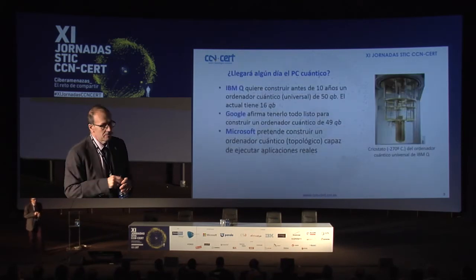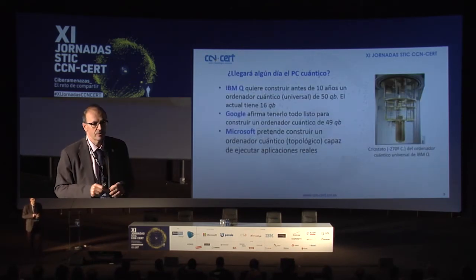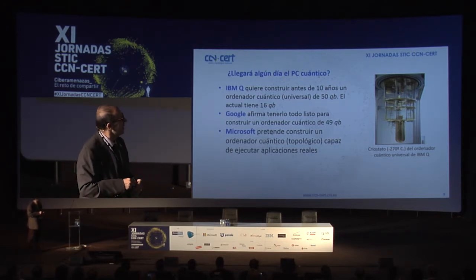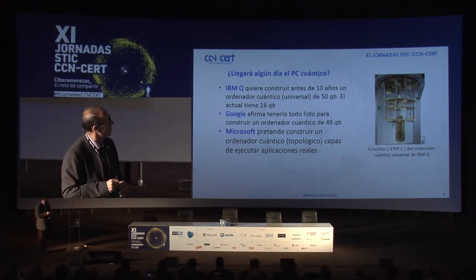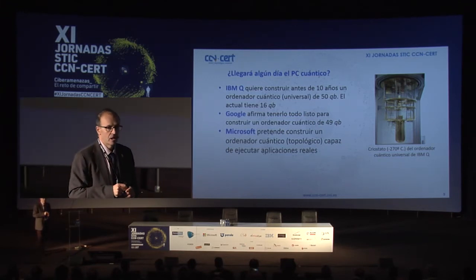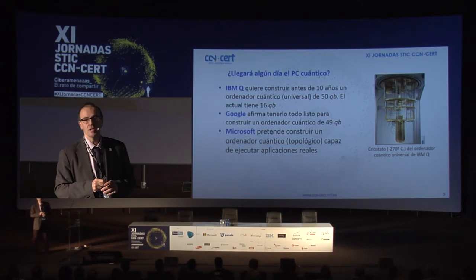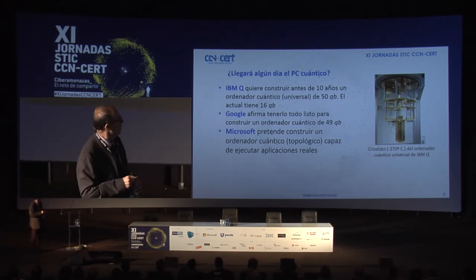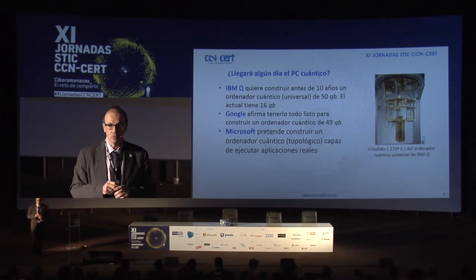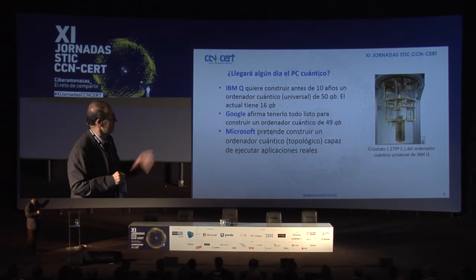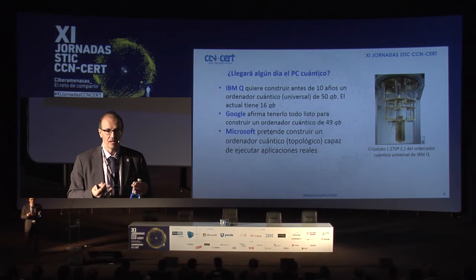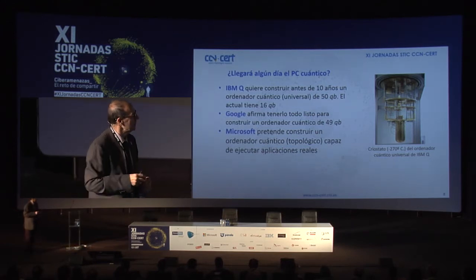¿Llegaremos algún día a tener un PC cuántico? Las grandes corporaciones están trabajando en esta línea. IBM acaba de anunciar en septiembre, en un congreso reciente, que tiene un ordenador de 16 qubits y espera tener en menos de 10 años un ordenador con capacidad de 50 qubits. Google dice que tiene todo listo para construir ya mismo un ordenador de 49 qubits. Son ordenadores de lo que se llama el ordenador cuántico universal, capaz de hacer cualquier tipo de operación.